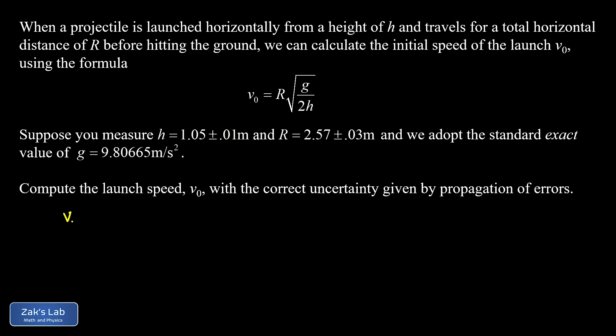So we start with the calculation of v₀ itself, and we plug in R there, 2.57 meters. And then for g, we use 9.80665. And again, we're calling that an exact value of g. And then we have in the denominator a 2 times h, and the h, the initial height of the projectile, was 1.05 meters.